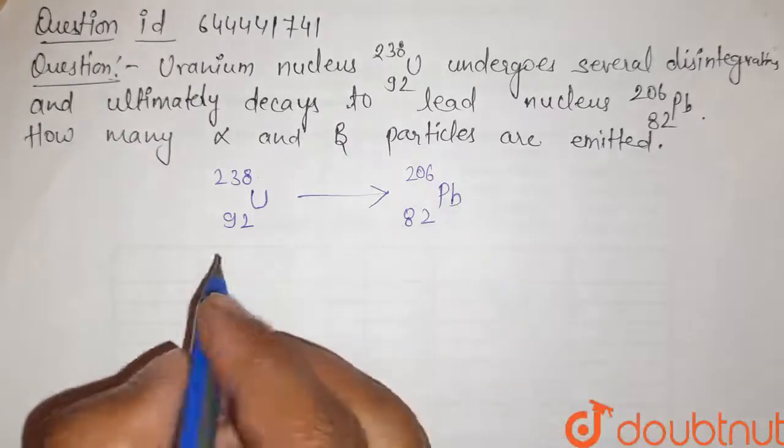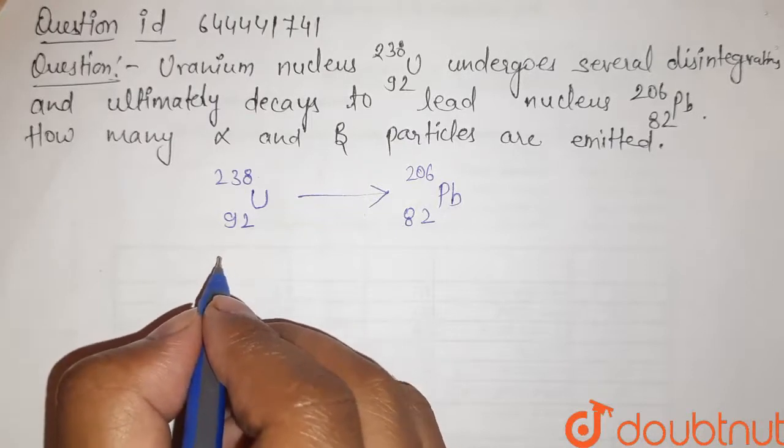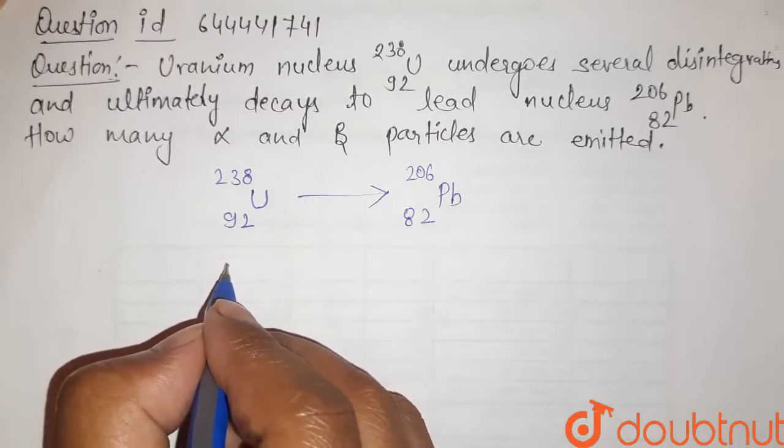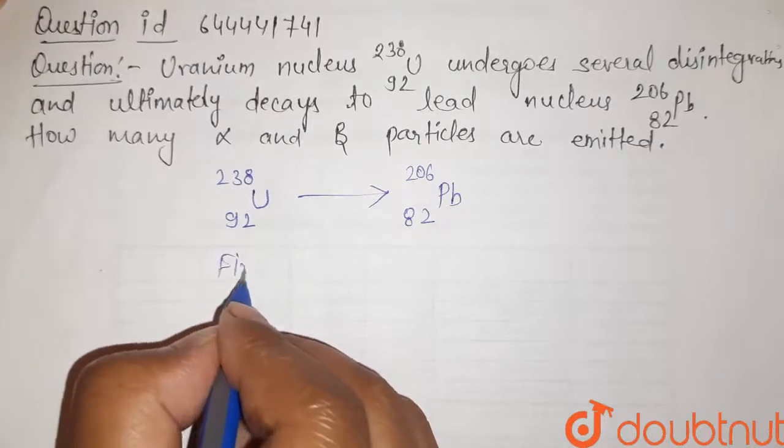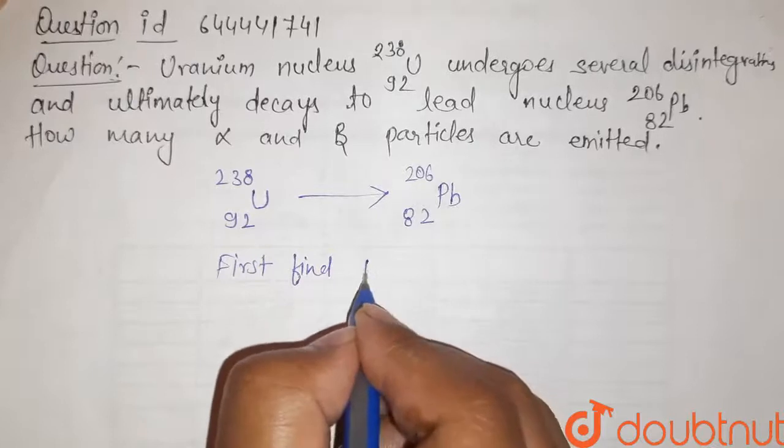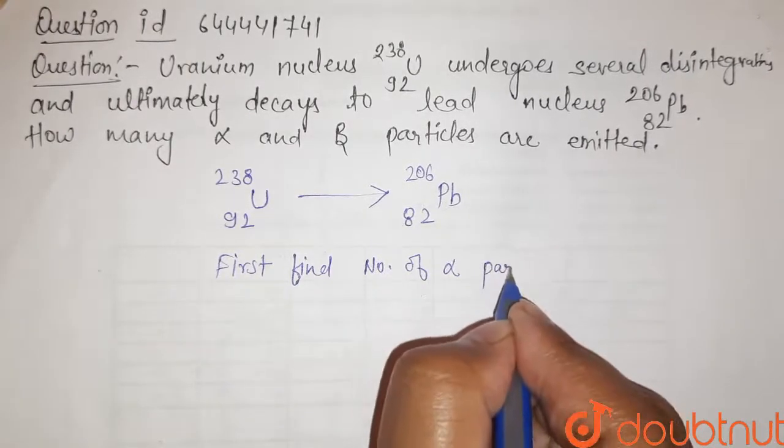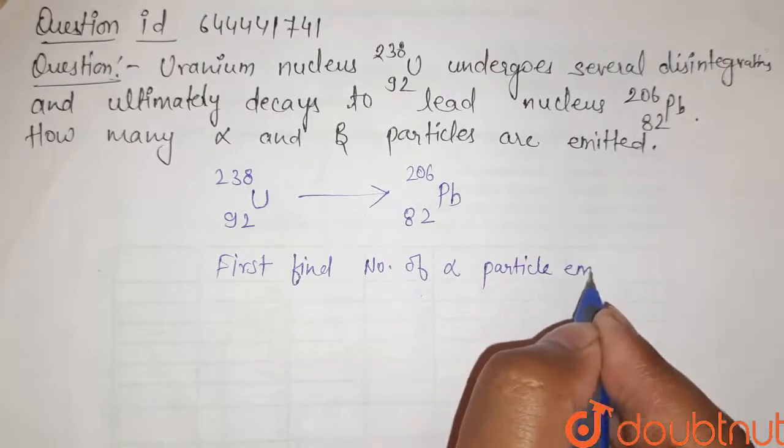So for this, first of all, we have to find how many alpha particles are emitted. First find number of alpha particles emitted.